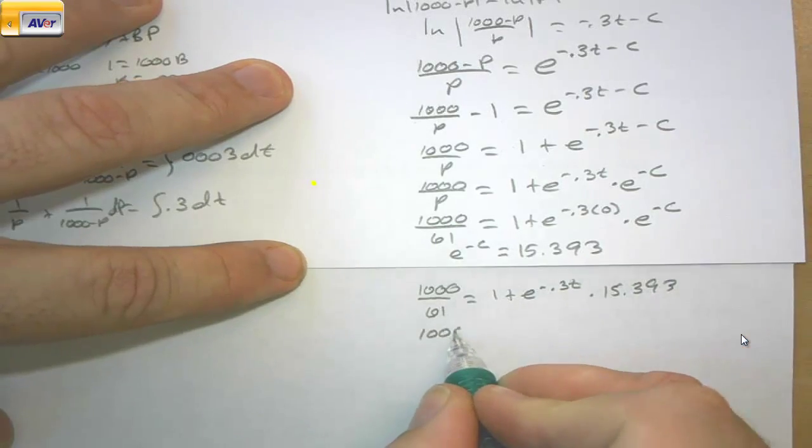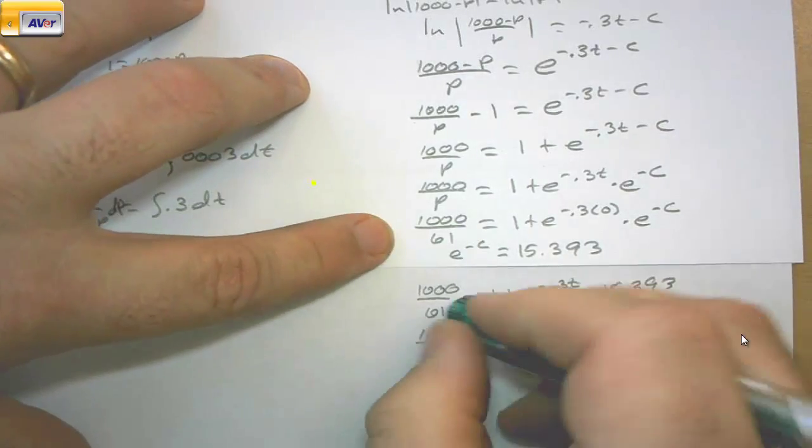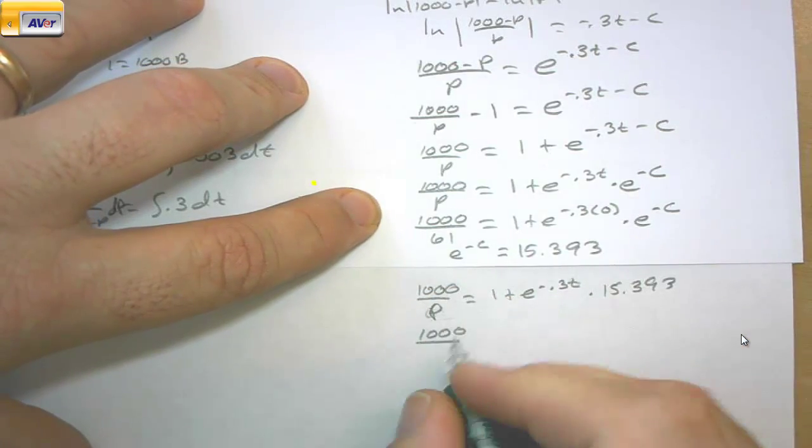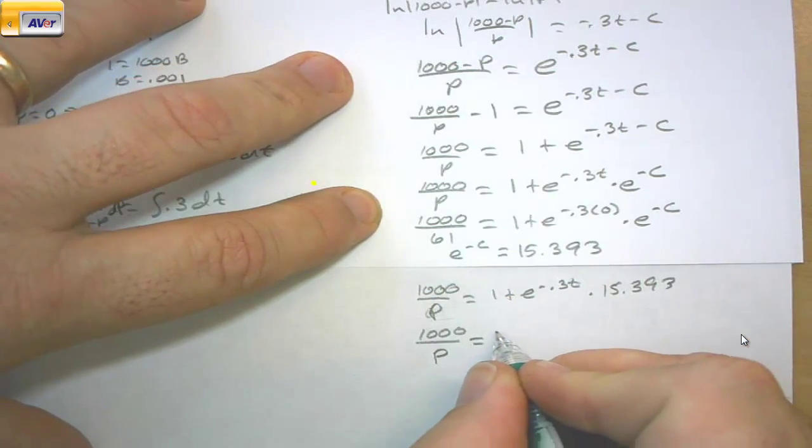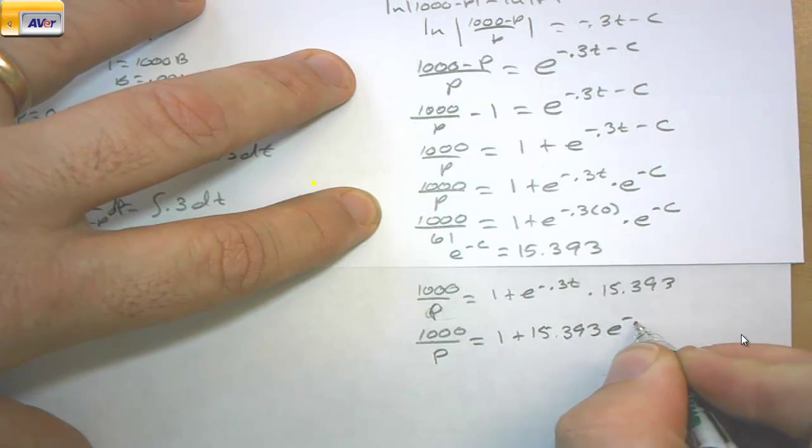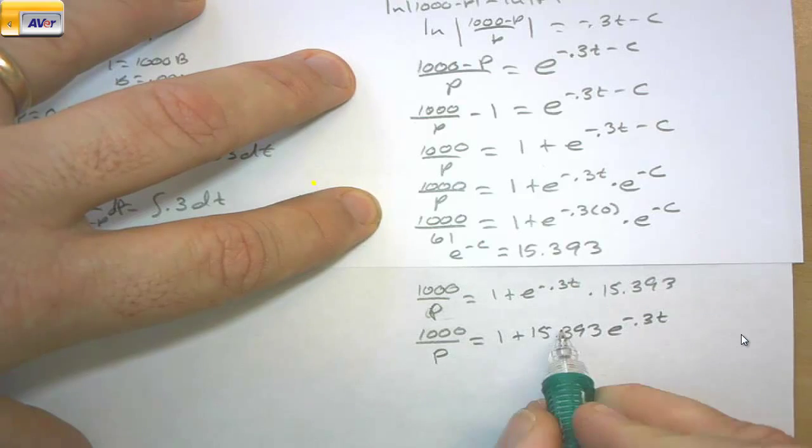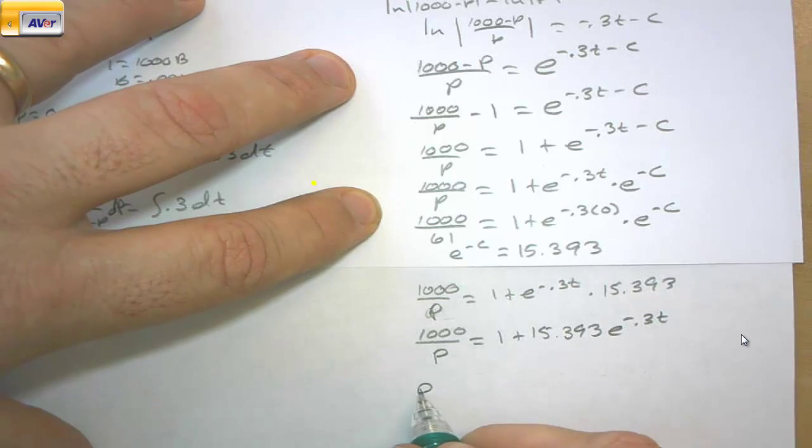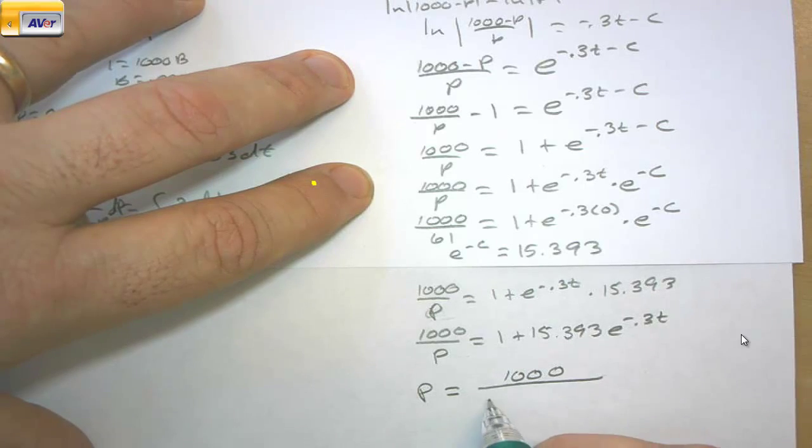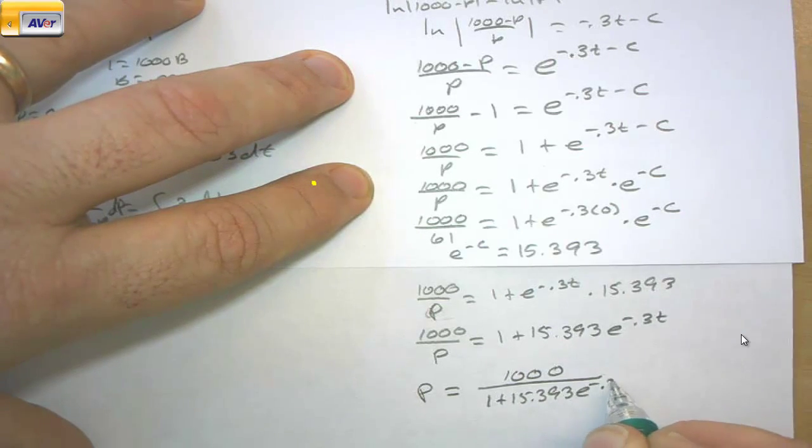So let's rewrite that. 1000 not over 61, but we're putting this back where we have the P. That's equal to 1 + 15.393e^(-0.3t). Now these two can trade places. So the original equation is P = 1000/(1 + 15.393e^(-0.3t)).